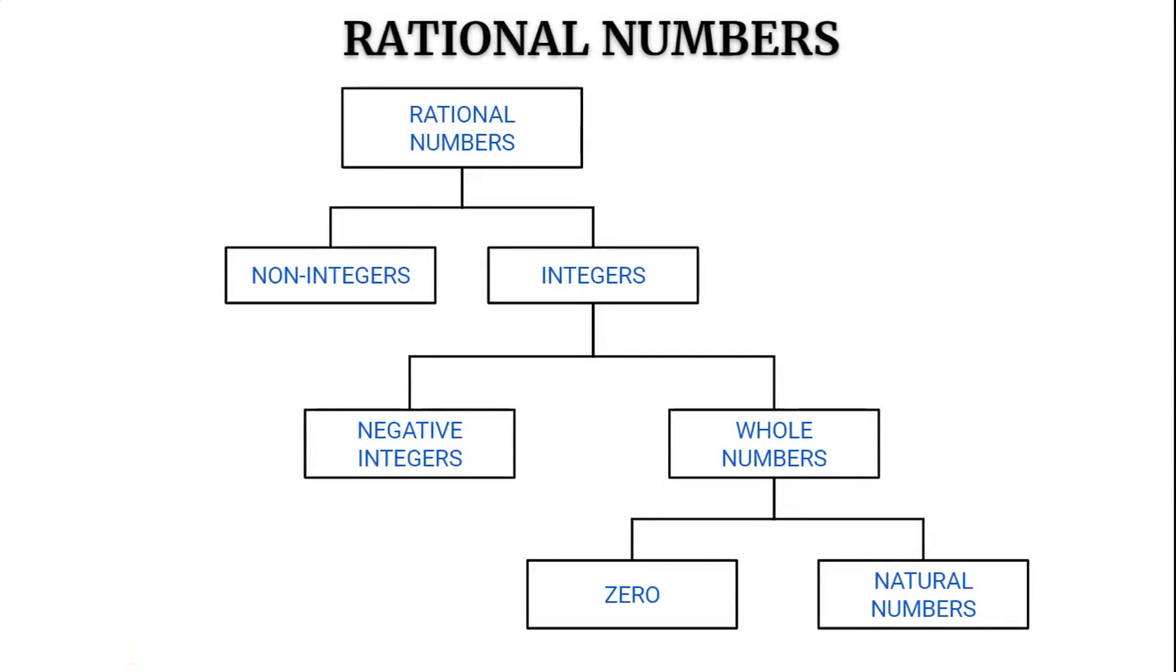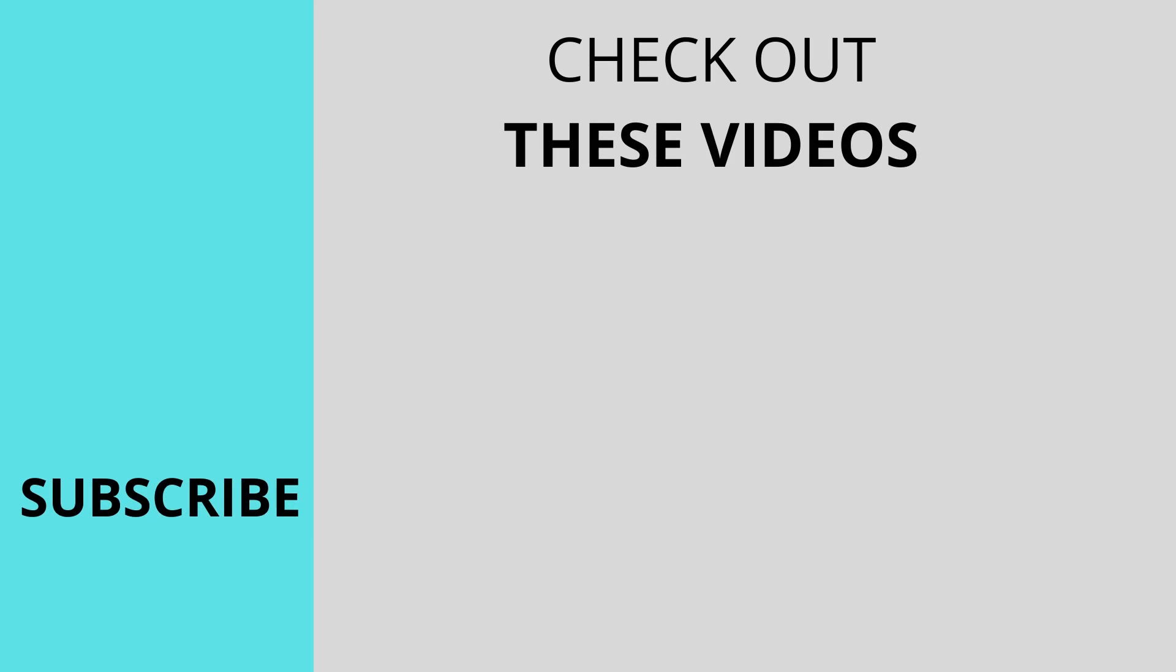Now finally, rational numbers can be categorized as non-integers and integers, and again integers can be divided into negative integers and whole numbers, and whole numbers includes 0 and natural numbers. Thank you.